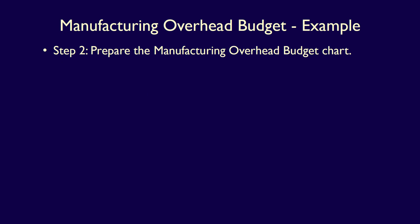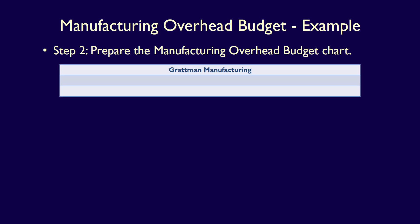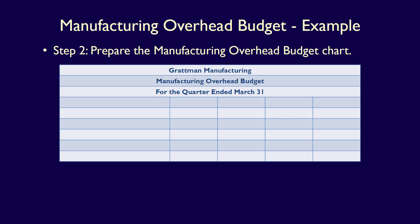Step two is to start and prepare the manufacturing overhead budget using a chart. As always, we start with the title – Gratman Manufacturing – then the name of the budget, Manufacturing Overhead Budget, and the date for the quarter ended March 31st. We then add the necessary columns: one for description, three for the months, and one for the quarter total – five columns in total. The headings are description, January, February, March, and first quarter. We can now add our first heading, variable costs, under which we'll list all variable costs related to Gratman Manufacturing.